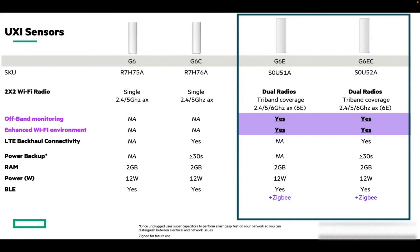Talking about technical specifications of the 6 GHz sensors: they come with two new variants — ethernet and cellular. We have dual radios installed, which can do tri-band coverage — 2.4, 5, and 6 GHz — and they can do off-band monitoring as well as enhanced Wi-Fi environment charting. We have cellular backhaul and power backup with the G6EC, which has cellular functionality, and BLE with a Sigma radio added for future use.